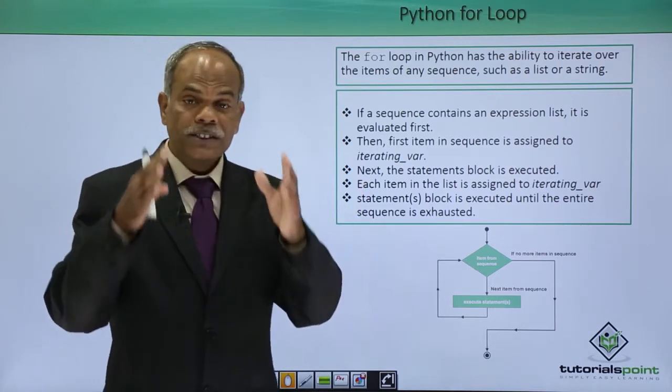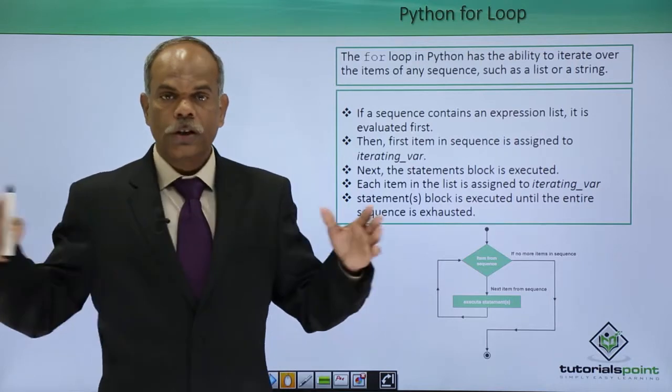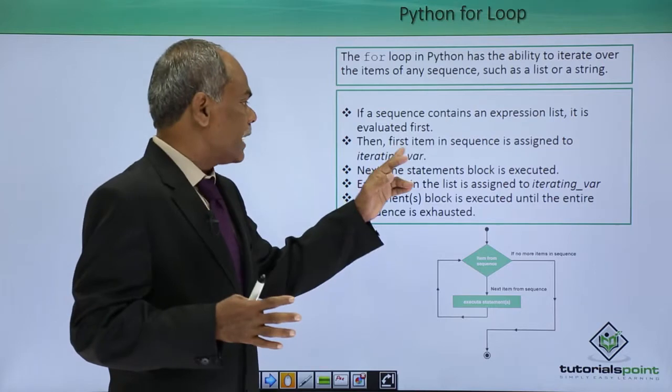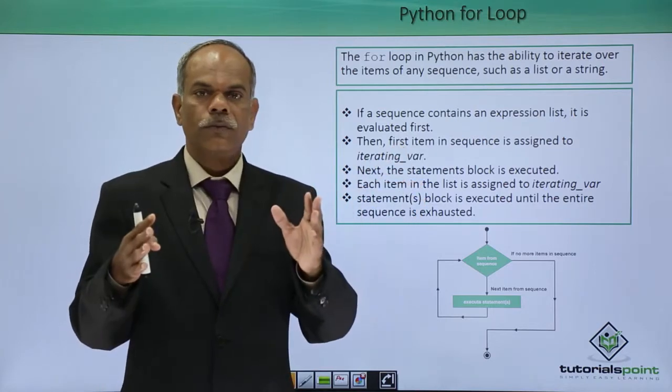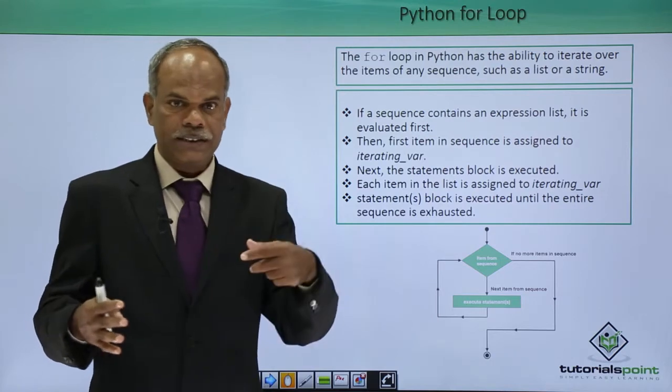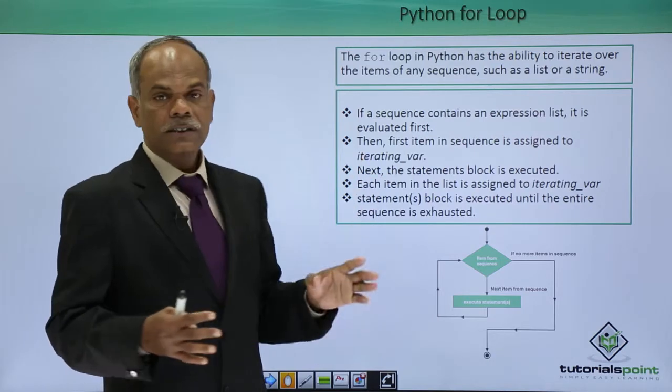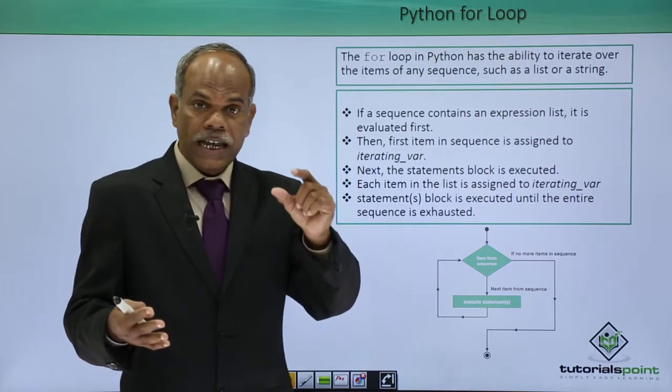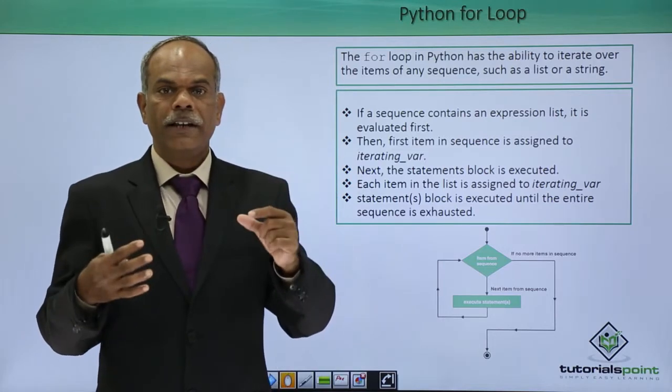The first item in the list of elements in the given sequence is assigned to a variable, to what we call it as an iterating variable, the variable that controls the iteration. That is how it is initialized. The initialized value of that iterating variable is taken up.